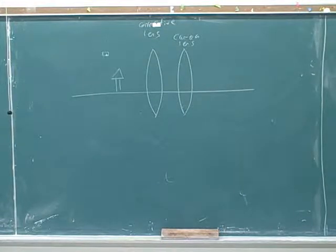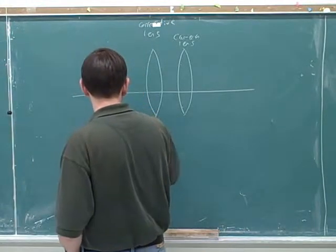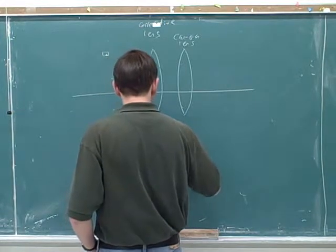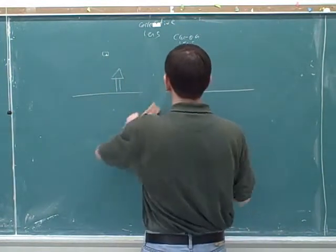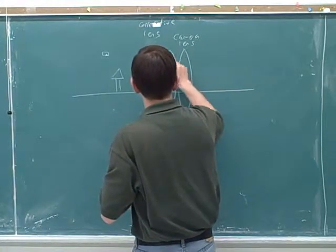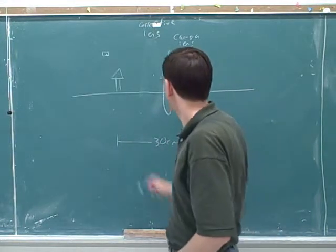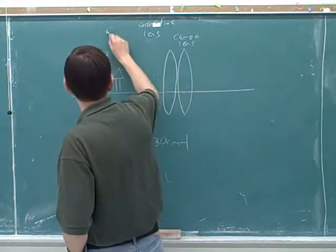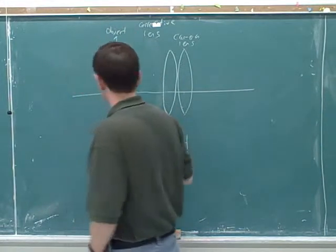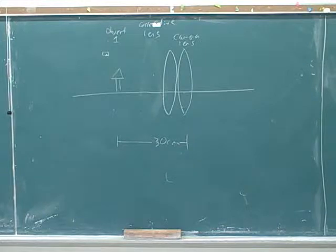So first of all, we need to draw the object for the corrective lens. So where should we put the object for the corrective lens? Well, my first question is where should we put the object for the corrective lens? What distance exactly should it be at? Take your time. Is that 30 centimeters? Yeah, we want this distance to be 30 centimeters. I guess we're putting the lenses right next to each other. So the distance between them is pretty much negligible. So 30 centimeters from one lens will be pretty much 30 centimeters from the other.